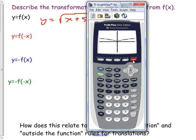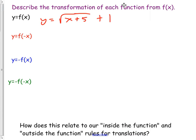It flipped it - like a seagull shape. It flipped left-right. That makes sense because stuff on the inside does left-right things, right? So a negative on the inside flips it left-right.